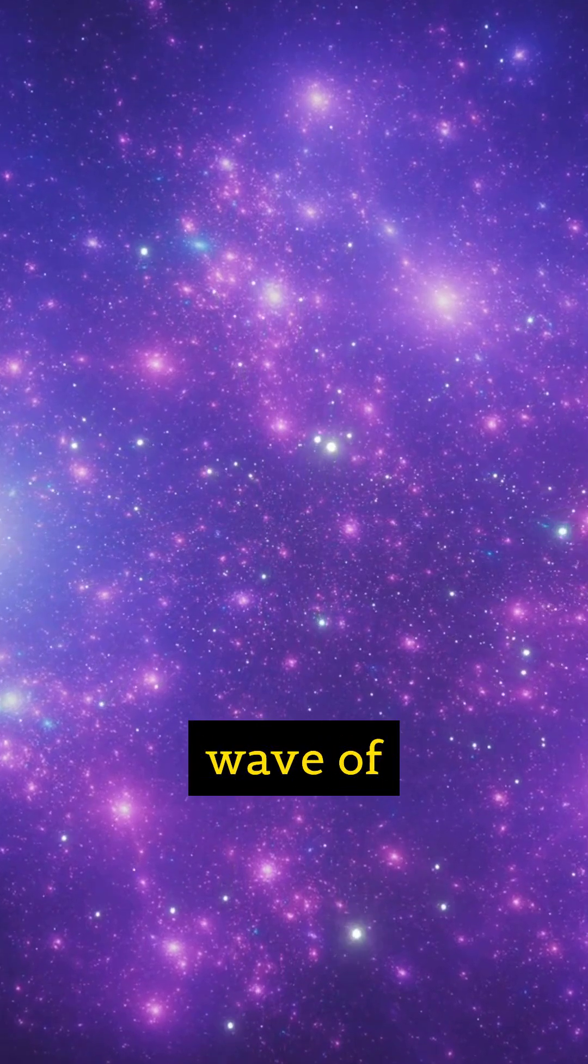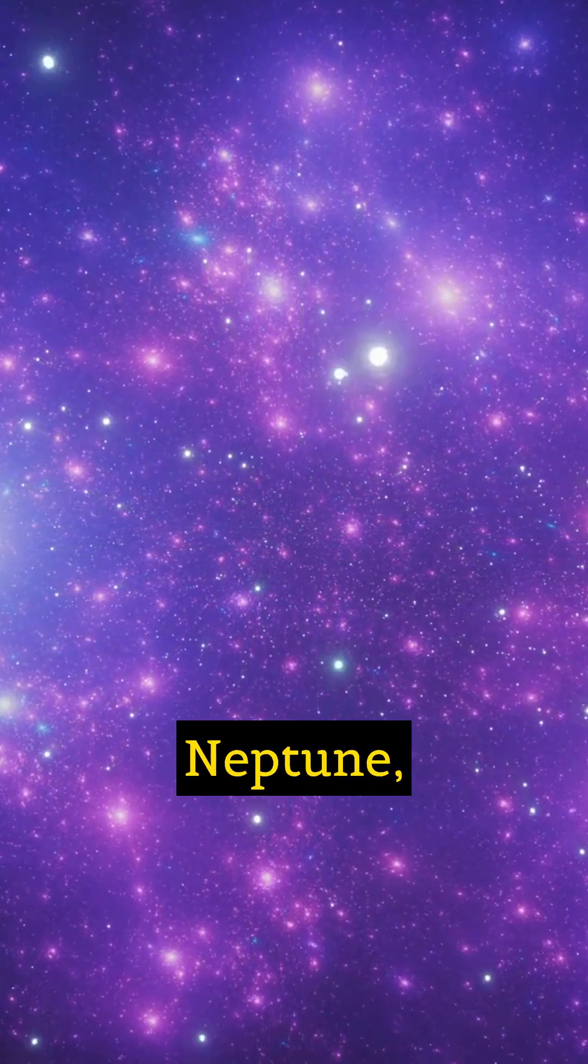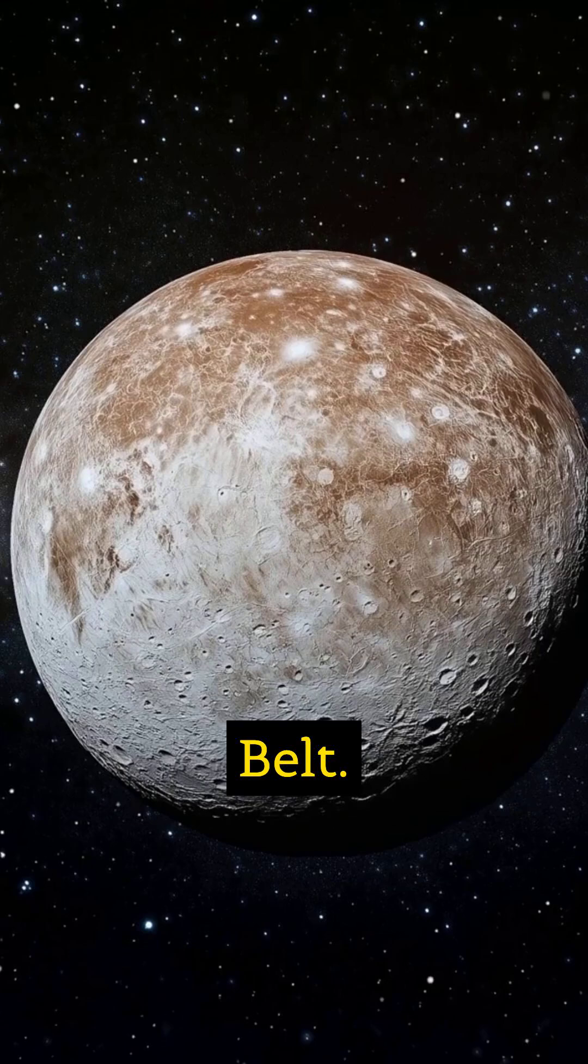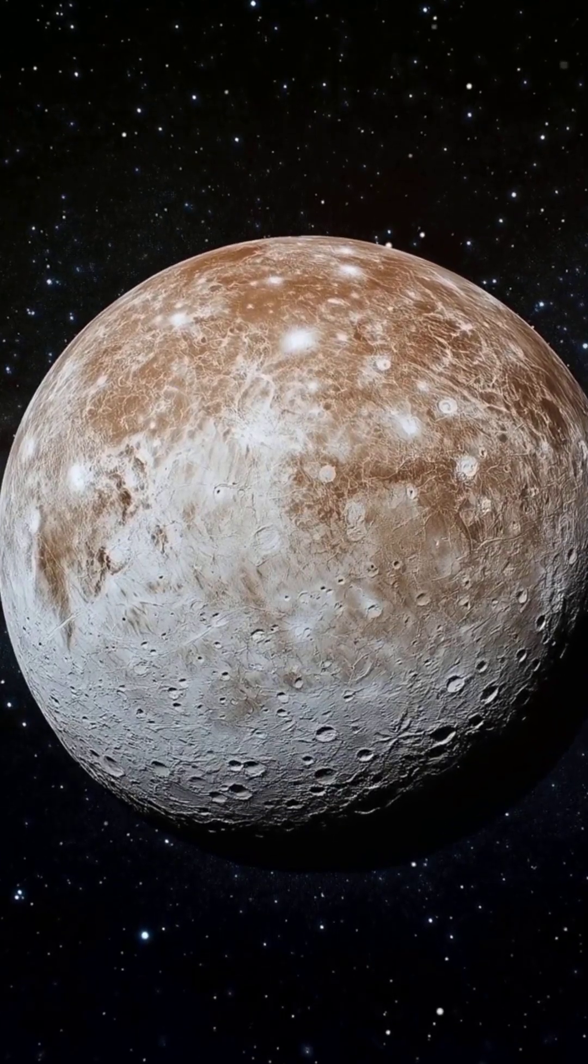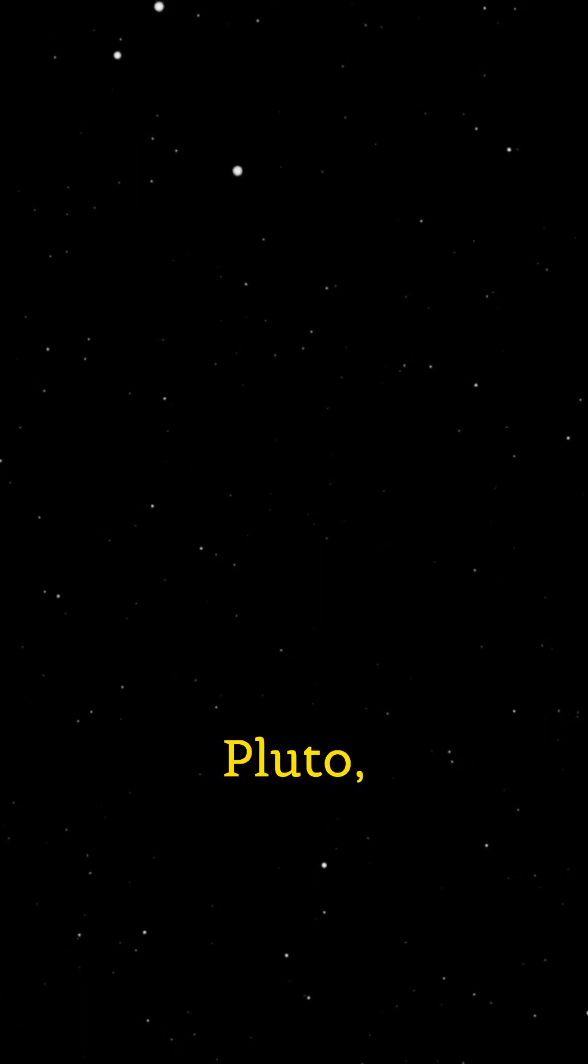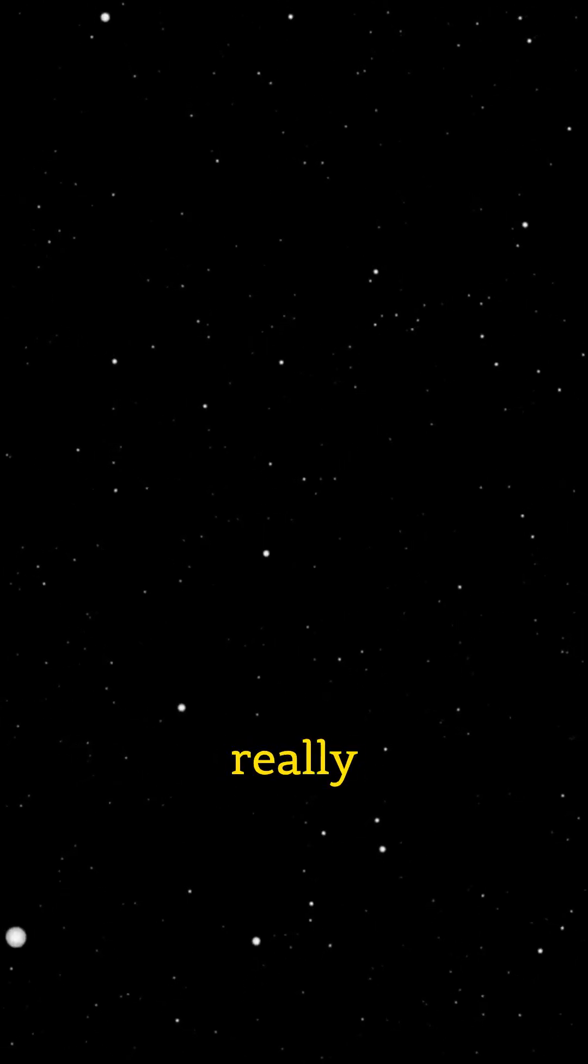The 1990s brought a wave of new discoveries beyond Neptune in a region called the Kuiper Belt. Astronomers found numerous icy bodies, some nearly as large as Pluto, like Eris. This raised a critical question: how many planets did we really have?